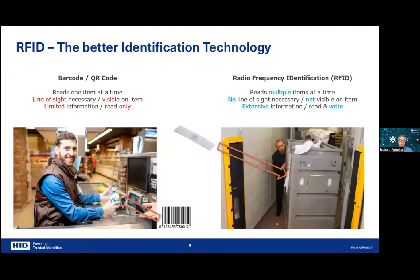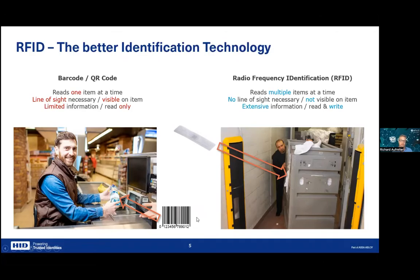RFID is more or less a more advanced replacement for a barcode. A barcode reads one item at a time, requires line of sight, and is read-only with very limited information. RFID overcomes that — there's a chip and an antenna, no line of sight required, you can read multiple items at once, like a whole hamper of tagged linen going through a gate. You can also read and write. The only disadvantage is cost — it costs more than printing a barcode on paper or plastic.